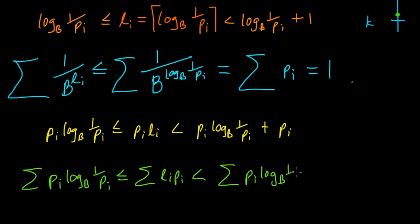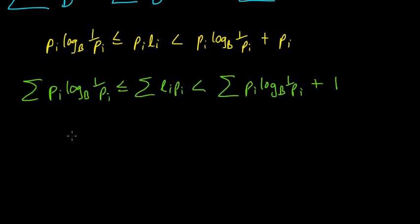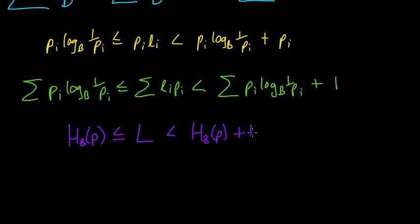We can then sum over all i: since each term satisfies the inequality termwise, the sums also satisfy it. The middle sum is the expected codeword length L. The left-hand side — summing p_i · log_b(1/p_i) — is the base-b entropy H(p). The right-hand side gives H(p) + 1 (since the sum of p_i equals 1). So we have H(p) ≤ L < H(p) + 1.